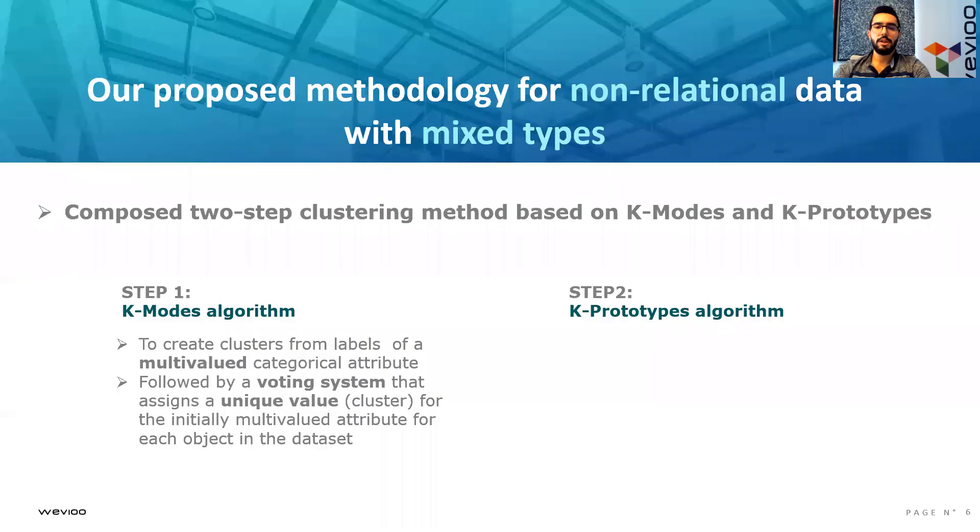This is achieved by replacing every value in the list of labels of that multivalued key by the cluster it belongs to. Then we can extract the most represented cluster, which will be the unique value assigned to that key.